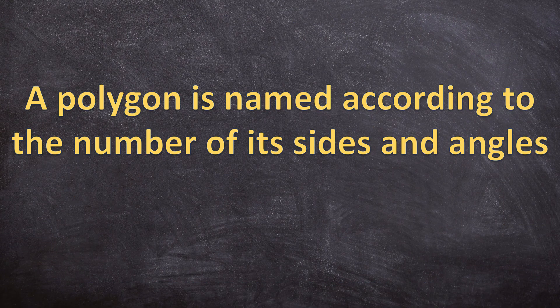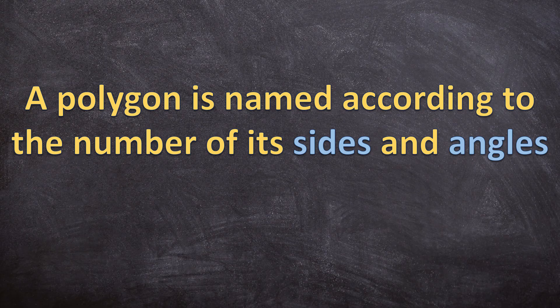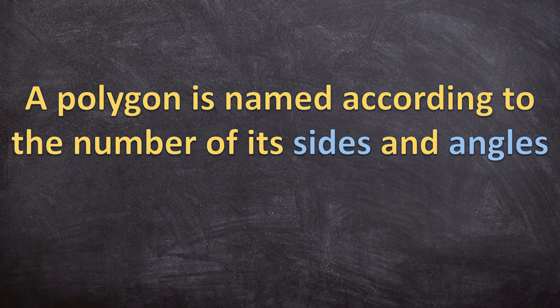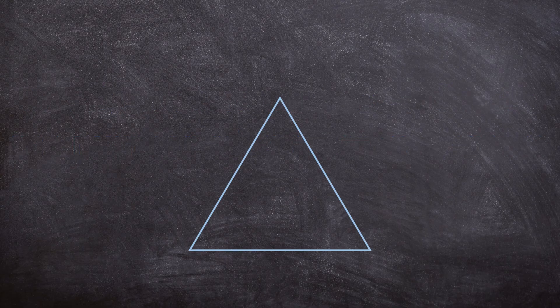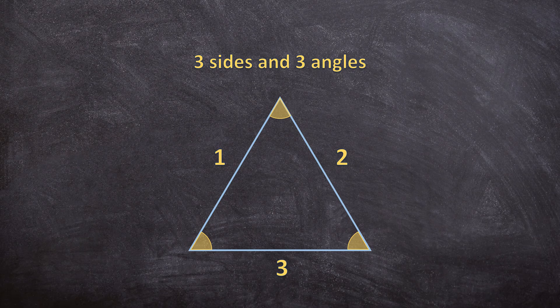A polygon is named according to the number of sides and angles it has. For example, let's look at the first shape. Here we have a polygon with 3 sides and 3 angles. And this is called a triangle.